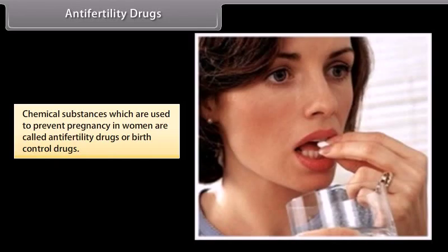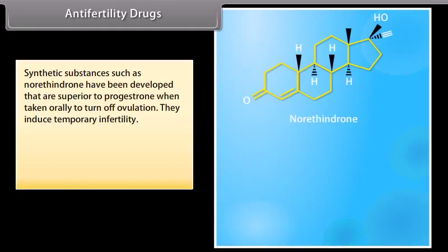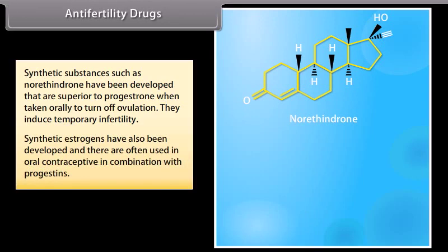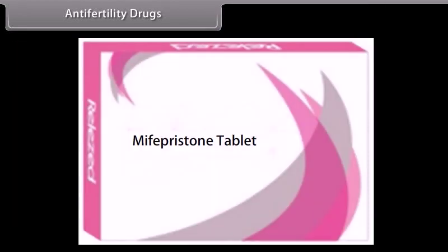Antifertility drugs: chemical substances used to prevent pregnancy in women are called antifertility drugs or birth control drugs. Progesterone is the most common progestin. Synthetic substances such as norethindrone have been developed that are superior to progesterone; when taken orally, they turn off ovulation and induce temporary infertility. Synthetic estrogens have also been developed and are often used in oral contraceptives in combination with progestins. A very potent synthetic estrogen is ethinyl estradiol. Mifepristone is a synthetic steroid that blocks the effects of progesterone and is used as a morning-after pill in many countries.